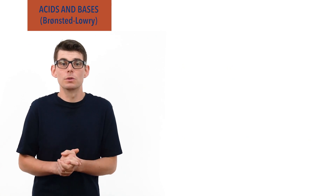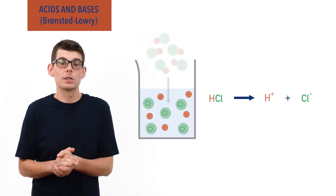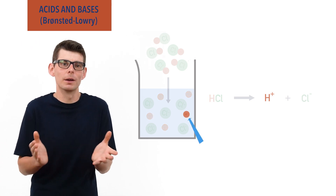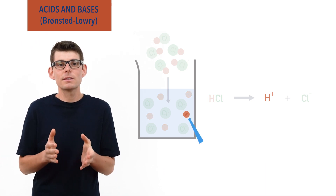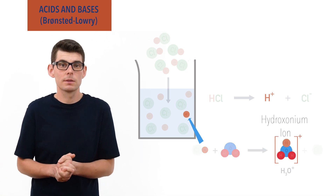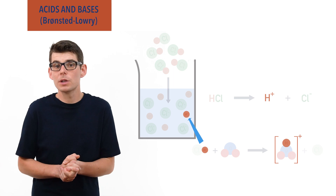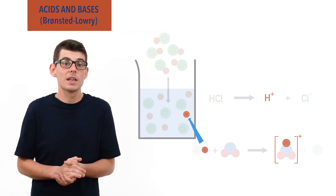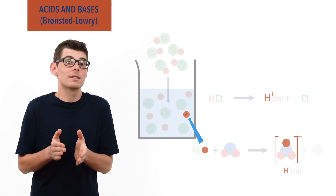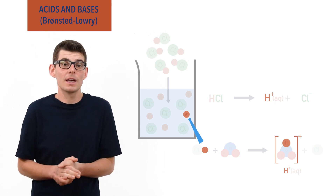When acid molecules dissolve in water, they dissociate or split apart, releasing a H+ ion into solution. Technically, a single proton is never able to freely move around in solution. Instead, it binds to a water molecule, forming a hydroxonium ion, H3O+. As the water is simply carrying the H+ ion around, however, we don't usually include it in equations. Instead, we just write H+(aq). Writing H+(aq) in equations is the same as writing H3O+(aq), just ignoring the water molecule carrying the H+ ion.